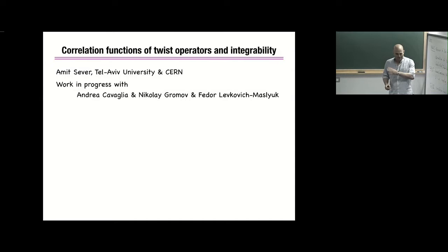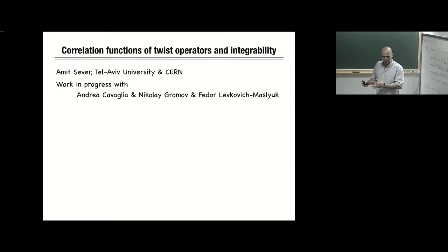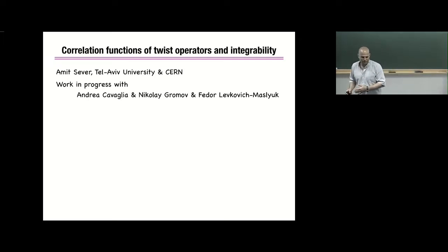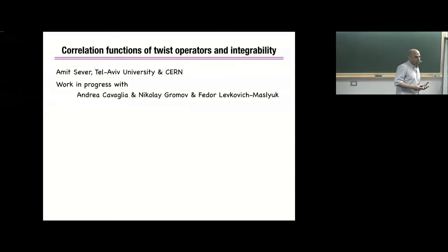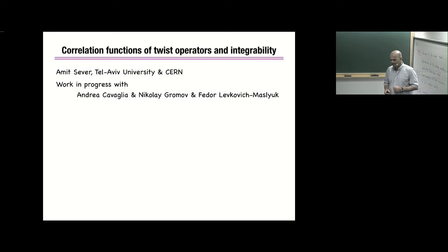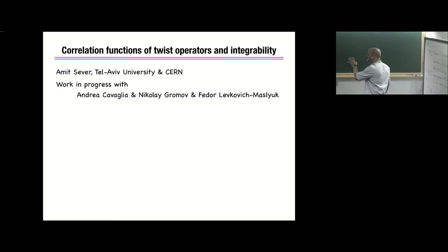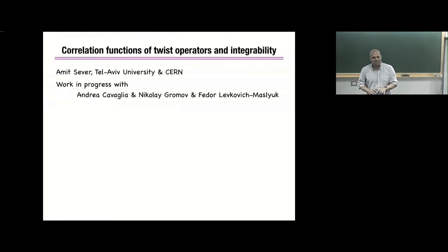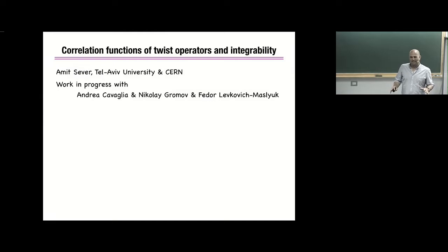This is still work in progress with Kolja Gromov, Federer who is a postdoc in Odita, and Andrea who is a student of Gromov. In this work we're trying to understand how to compute correlation functions, using the same strategy: taking the most simple integrable planar theory to explore it. It turns out that even that is not enough, and this is why we went and twisted the theory.